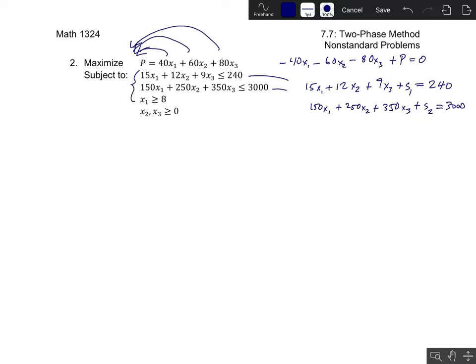So that's how to convert those first two inequalities into equalities. Now for our last constraint, notice that because the inequality faces the wrong way, this time we need a surplus variable. So I need to subtract a surplus variable that will be s3 to turn that into an equality. And that's all that we need for the setup.